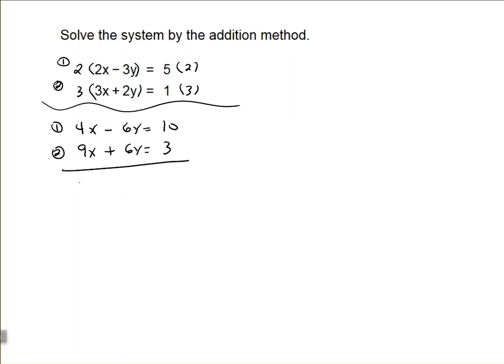So, now we have 4x plus 9x is 13x. Negative 6y plus 6y is 0, so that cancels out, equals 10 plus 3 is 13. Divide both sides by 13. X equals 1.